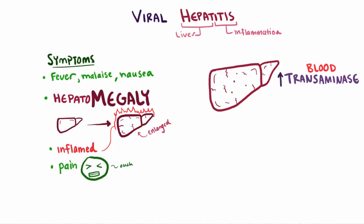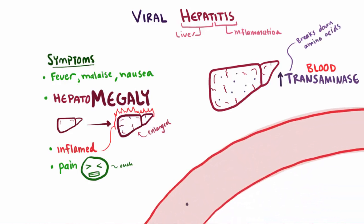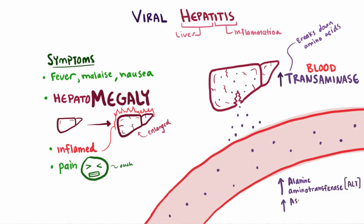This is because your liver has transaminase enzymes so it can do its job of breaking down various amino acids. Typically, the serum aminotransaminase — the amount in your blood — is pretty low. But when your hepatocytes start getting damaged, they start leaking these into the blood, so a common sign is a greater amount of both alanine aminotransferase (ALT) and aspartate aminotransferase (AST). Typically, even though both are elevated, ALT will be greater than AST in viral hepatitis.